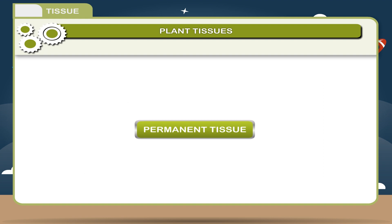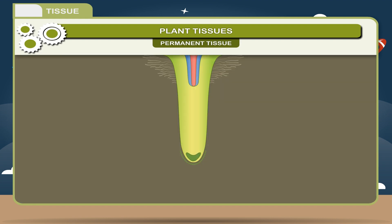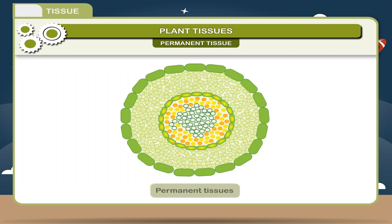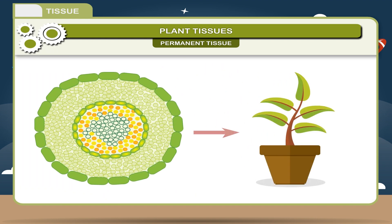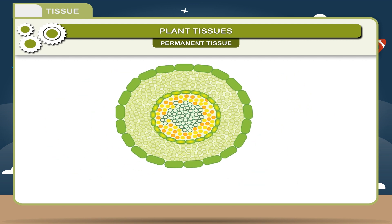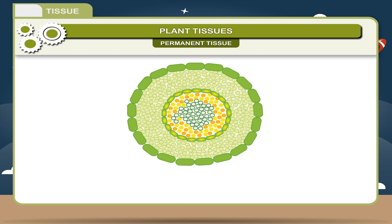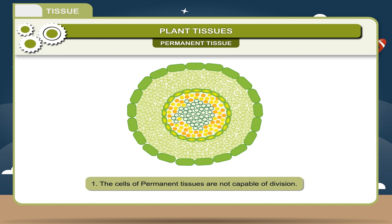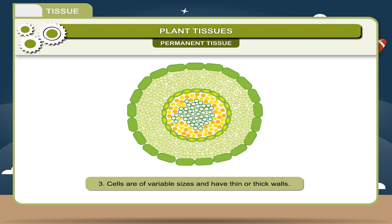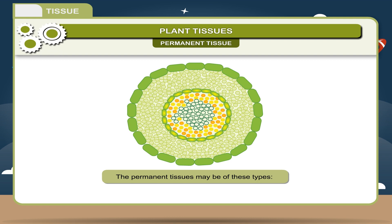Permanent tissue. When meristematic tissues cease to divide, they are converted into permanent tissues. These tissues constitute the whole plant. The characteristic features of permanent tissues are: 1. The cells of permanent tissues are not capable of division. 2. Cytoplasm is very less; nucleus, if present, is small. 3. Cells are of variable sizes and have thin or thick walls.